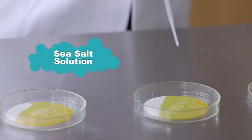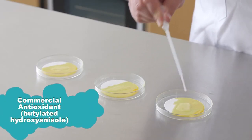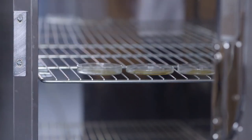Two, with a sea salt solution. Three, with a commercial antioxidant. In this case, BHA. Now place all of them in an incubator at around 40 degrees. Leave them for four to five days.